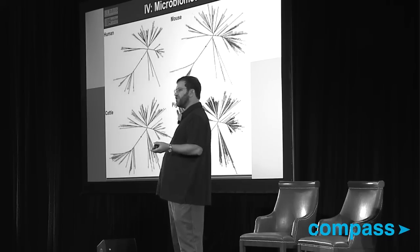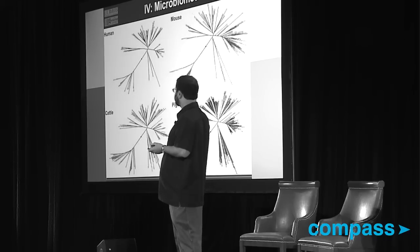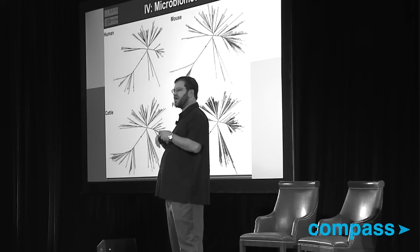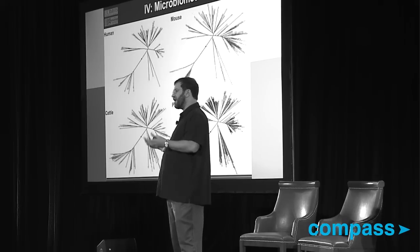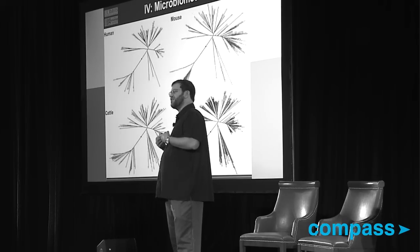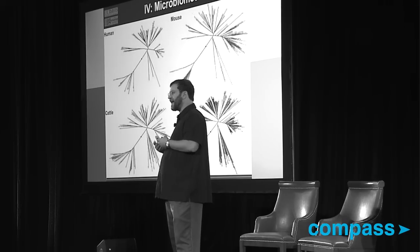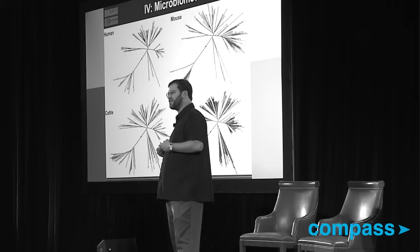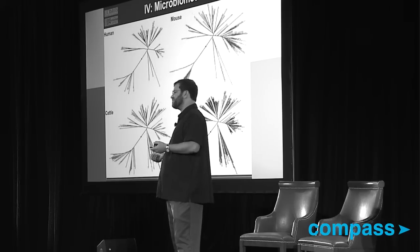If you compare them, you can do all sorts of interesting things. This figure basically shows that the microbes that are in and on other mammals are very similar to the microbes that are found in and on us. The associations that we have with these microbes on our skin and in our gut are hundreds of millions of years old.